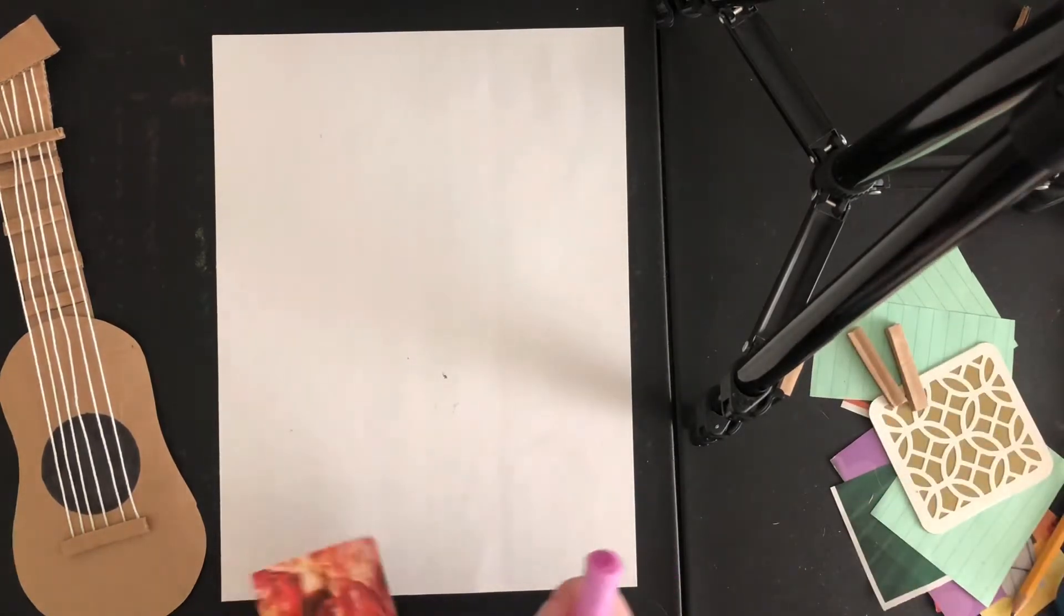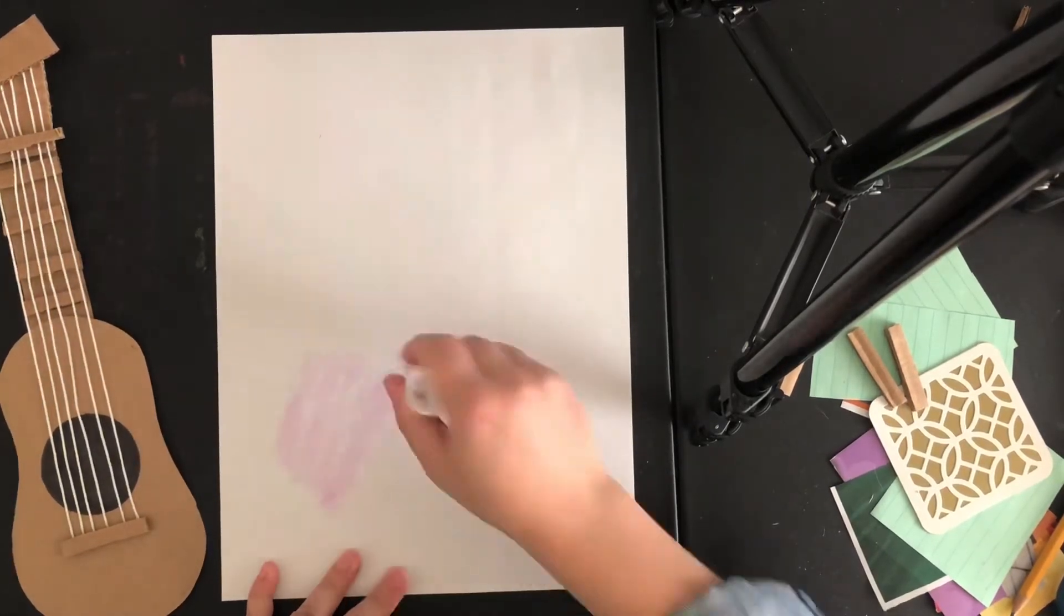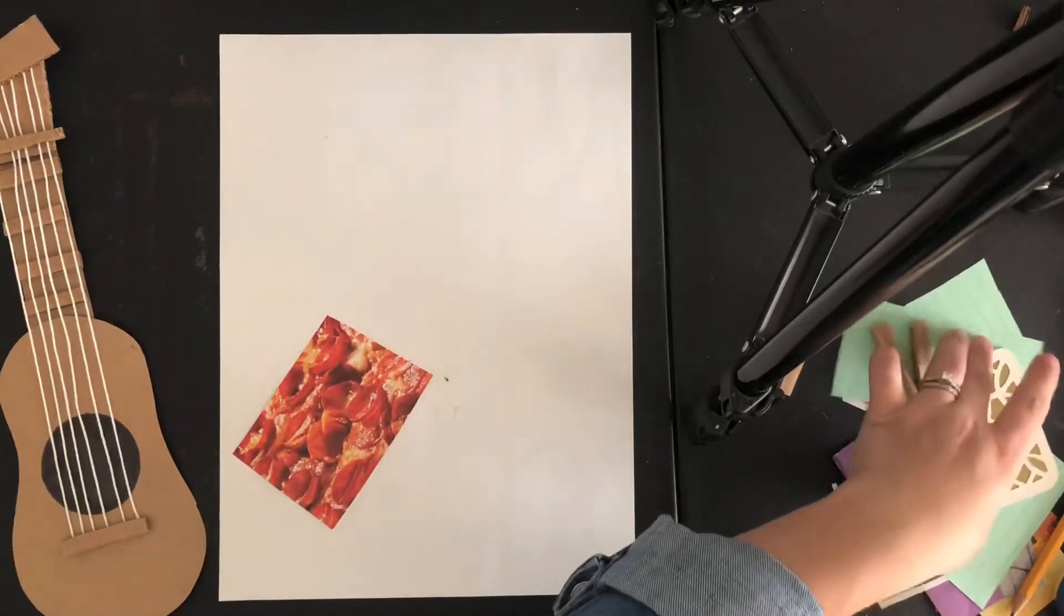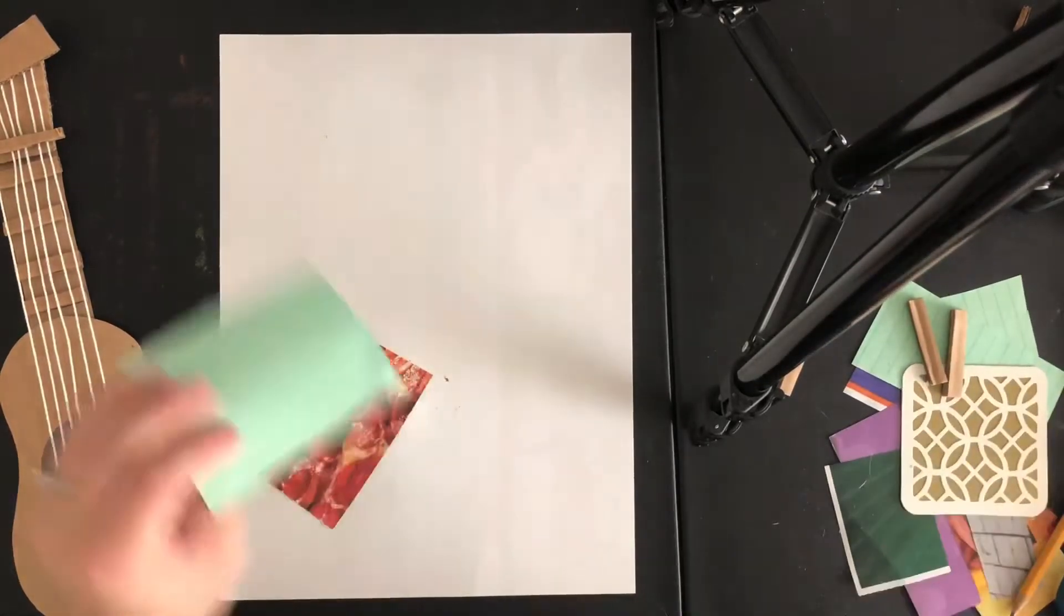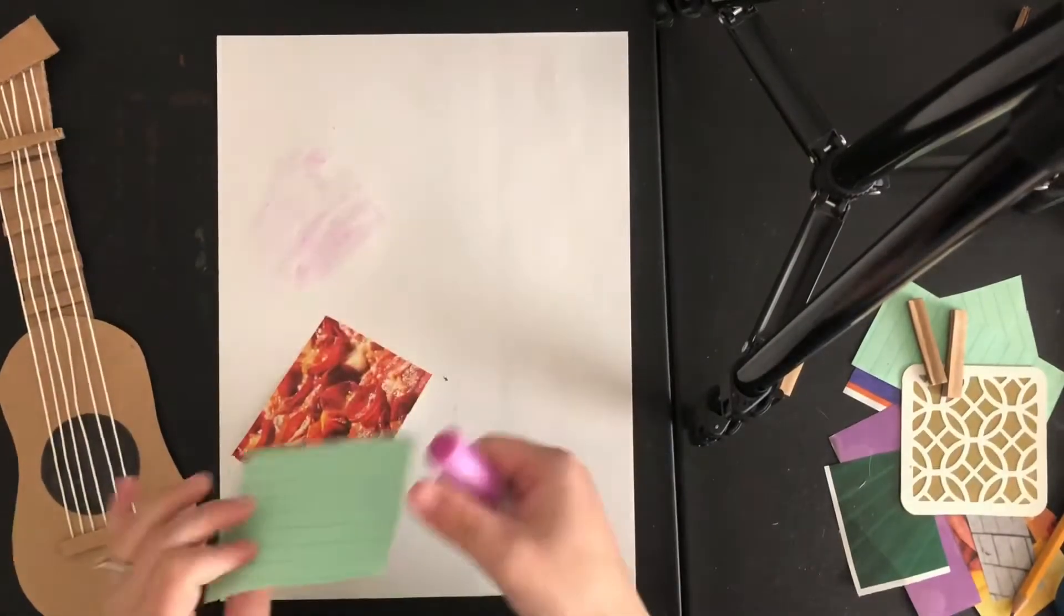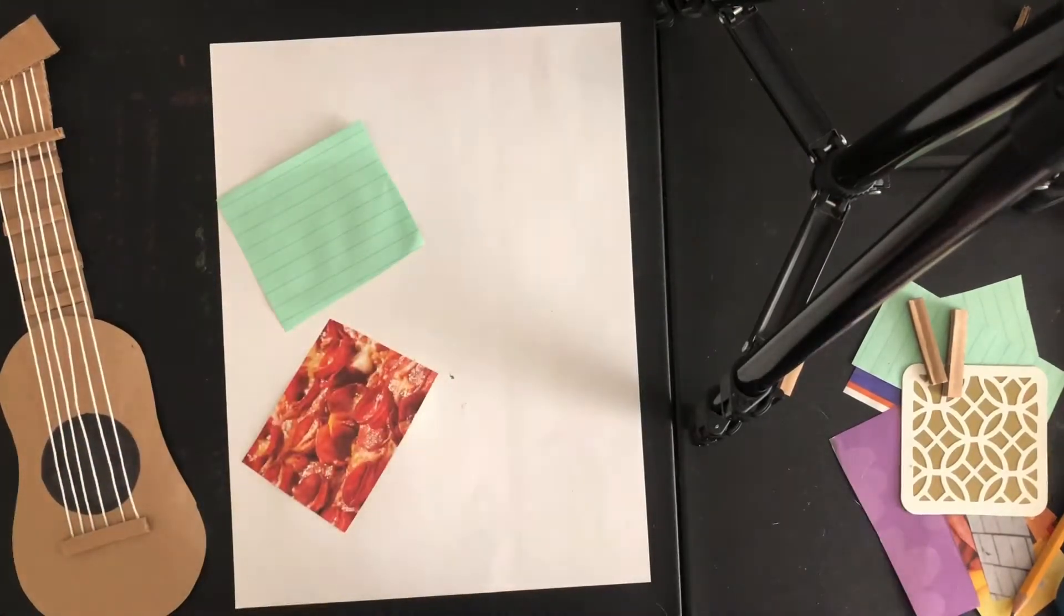What I've done is I've just taken some clippings from my mail that I get, the different food advertisements, things like that. I've also found just some paper in my house, some colored lined paper, and I'm going to glue that onto my white piece of paper.